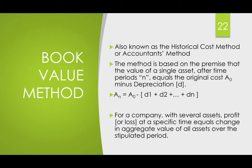The book value method is also known as the historical cost method or the accountant's method. The method is based on the premise that the value of a single asset after a time period of n equals the original cost of the asset A₀ minus all of its depreciation over all the years. For a company with several assets, the profit or loss at a specific time equals the change in the aggregate value of all its assets over the stipulated period.